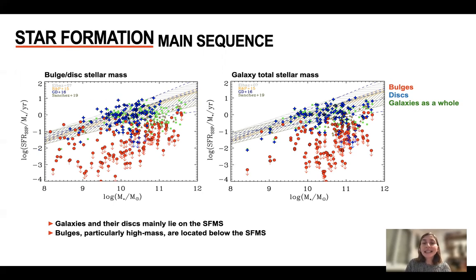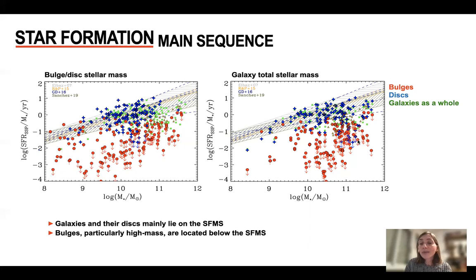What we see is that disks are mainly always on the star formation main sequence. And also many of the galaxies, when we take them as a whole, lie on the star formation main sequence. Only the most massive galaxies that have prominent bulges lie below the star formation main sequence, where most of the bulges also lie.